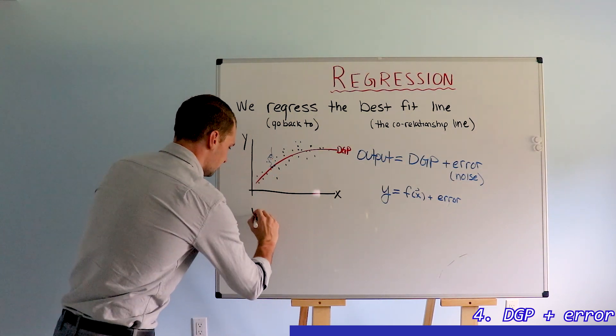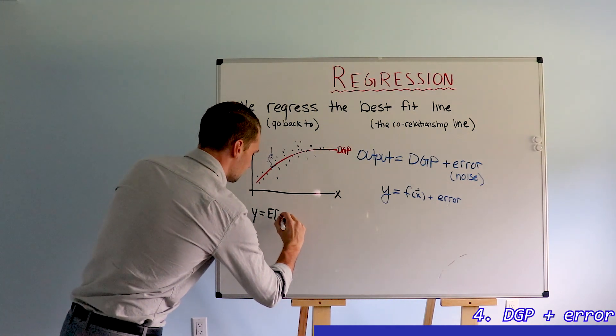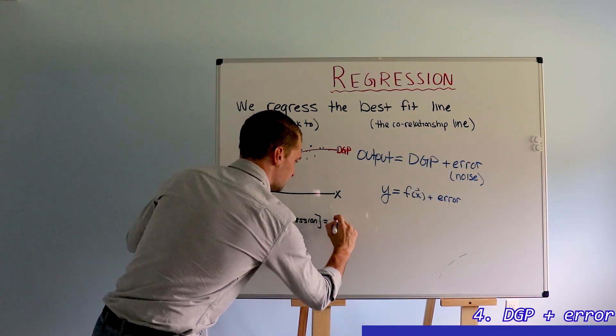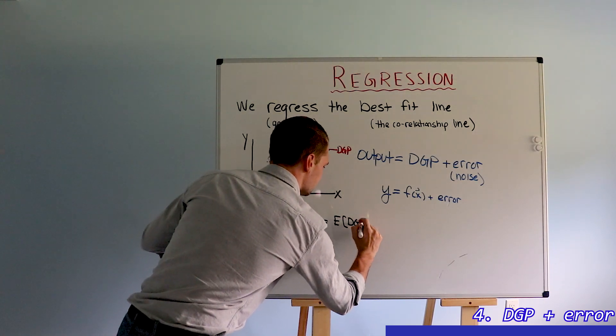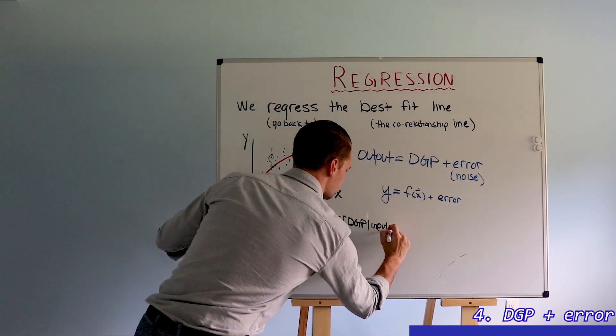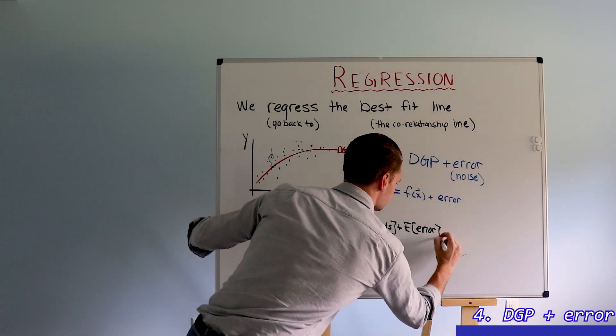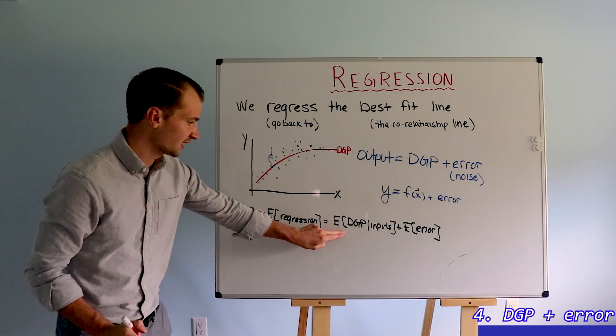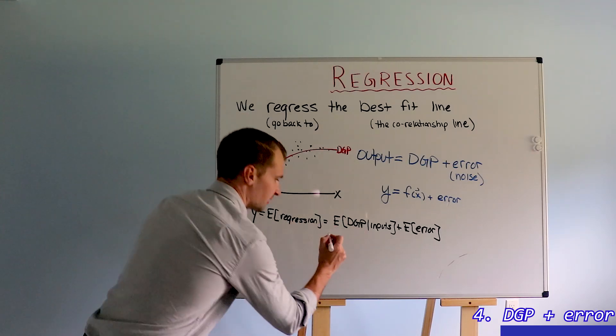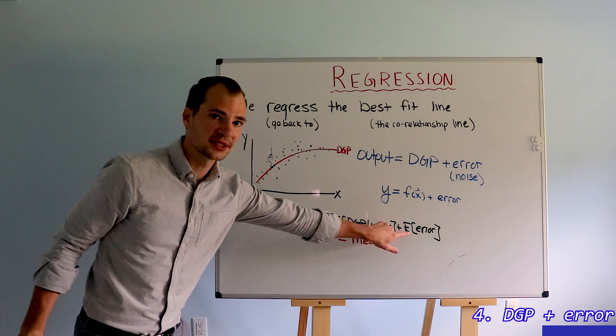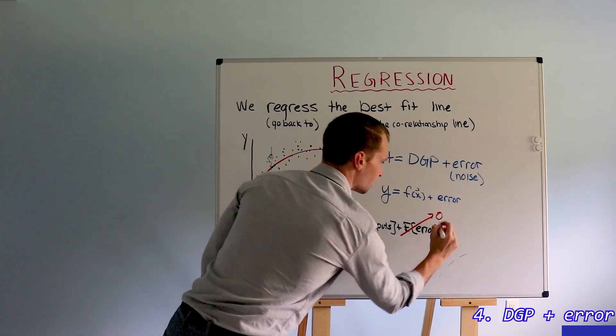And that's because our best guess of y is the expectation of the regression equation, which equals the expectation of this data generating process given the input plus the expectation of our error term. Here's the kicker. The expectation of our data generating process can also be called the mean and the expectation of our errors are zero.